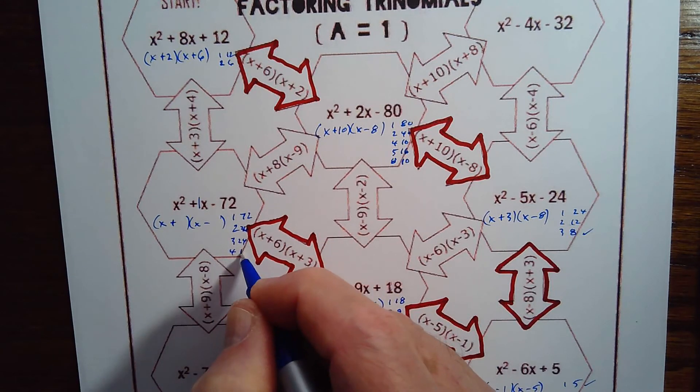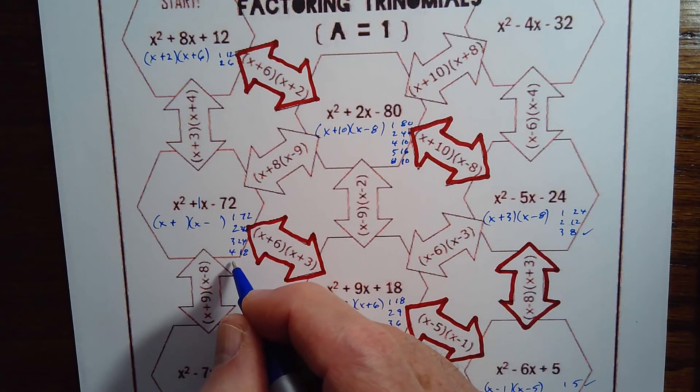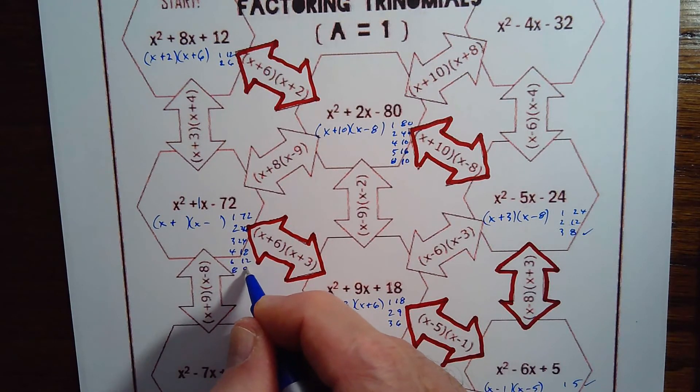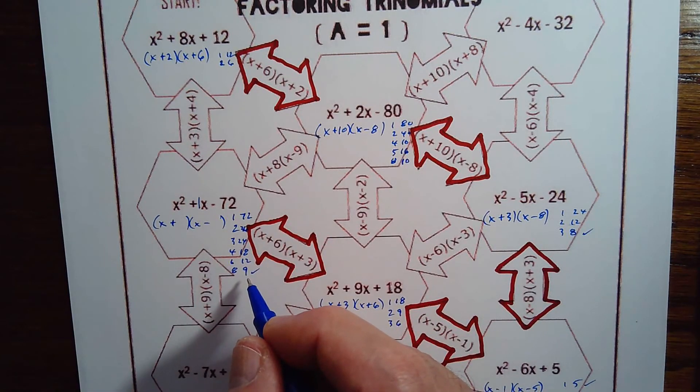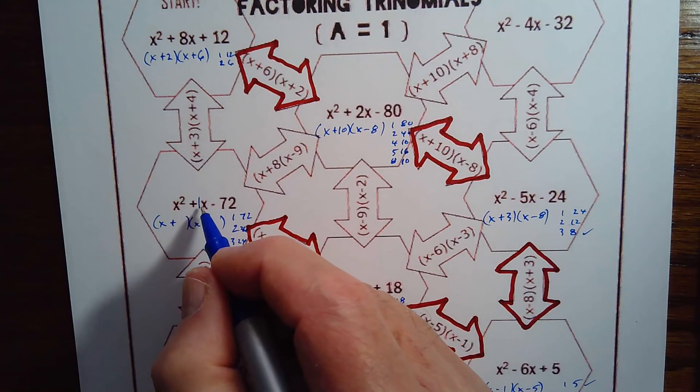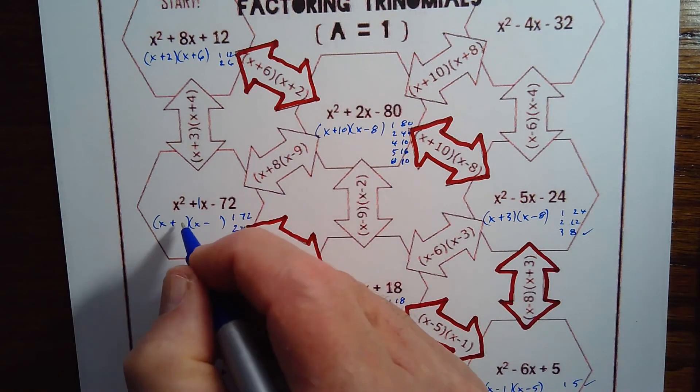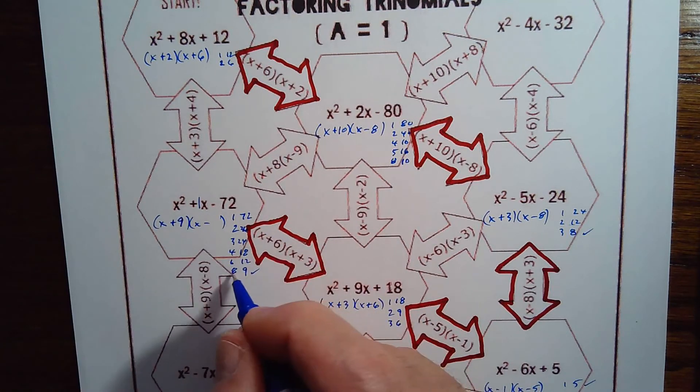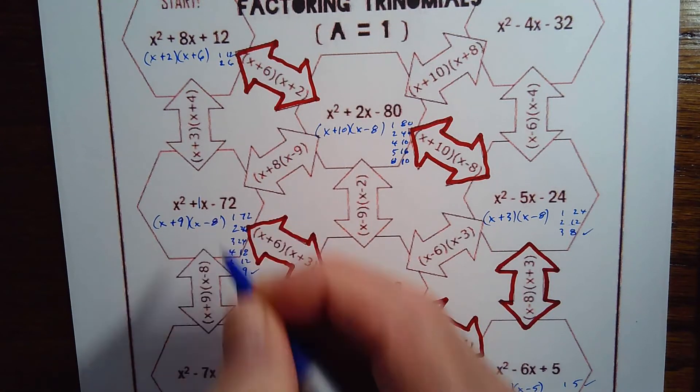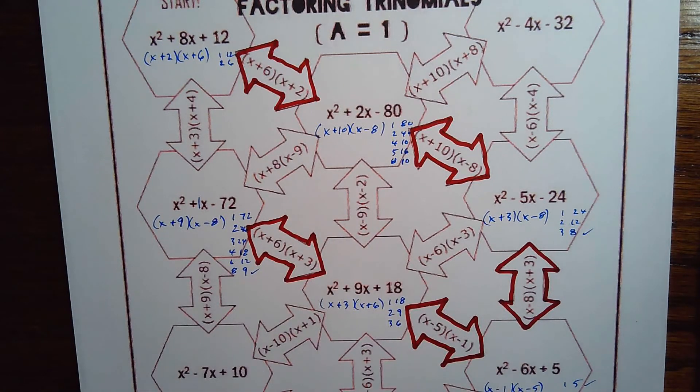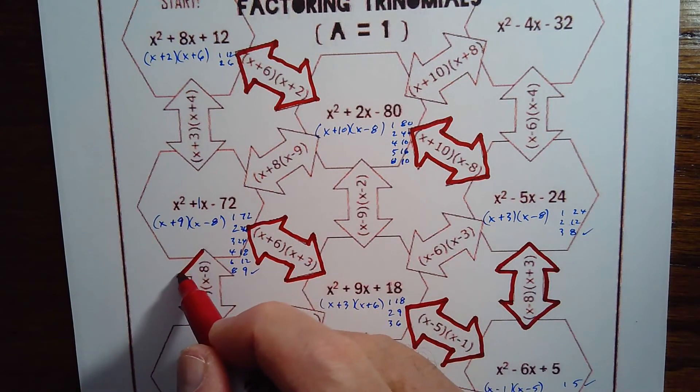8 and 9, winner winner chicken dinner. Now which one is the positive one? It's positive 1x, so I need more positive. So it's like I'm going to war with these two. I want the 9 to be positive and the 8 to be negative. And that looks like it's just going right down below it.